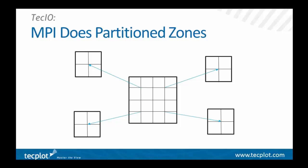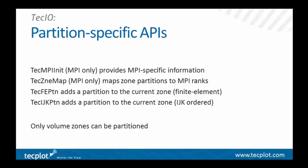All of these calls to TechIO will write to a single file using the MPI.io portion of MPI. To support MPI and partitioned zones, we've added four new APIs to the TechIO library. The first two are only in the TechIO MPI library, which is a separate library but installed along with TechPlot — and source is available from our website if you want to build a static library.